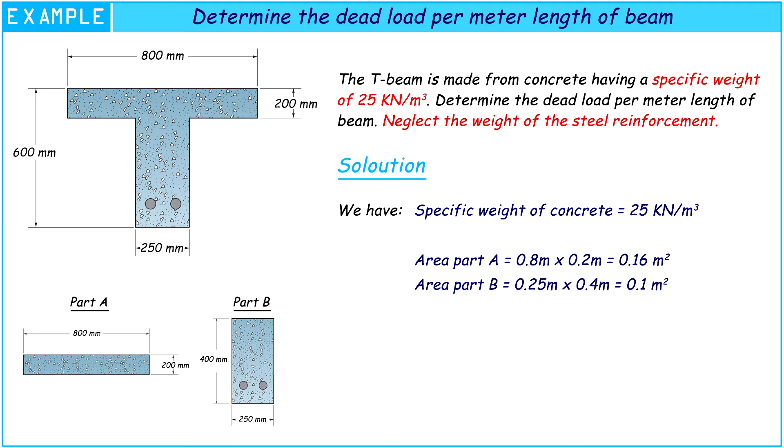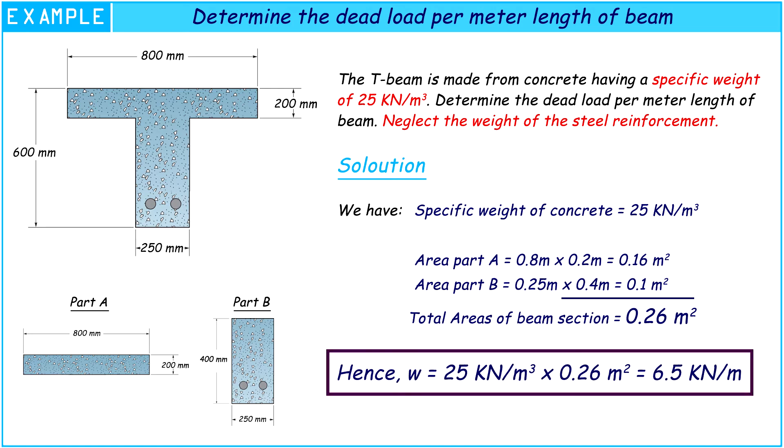After we calculated those two parts, we find the total area of the T-beam section equals 0.26 square meters. Now, we calculate the dead load per meter length of beam. The answer is 6.5 kN per meter.